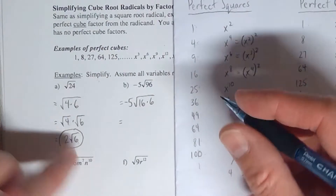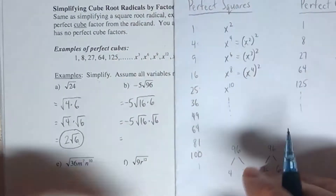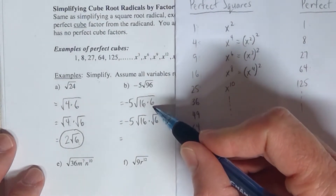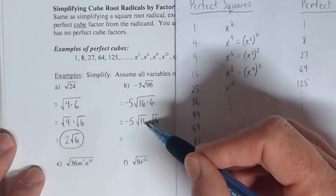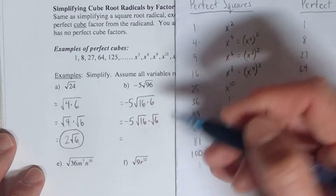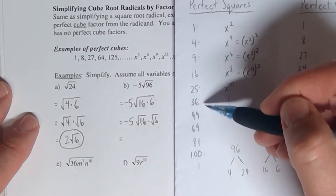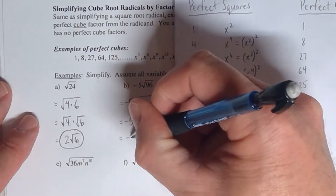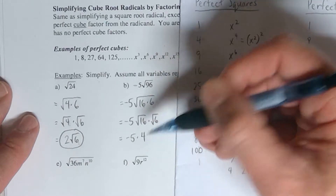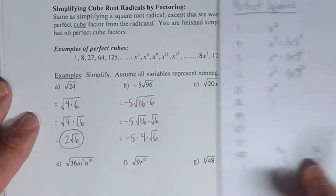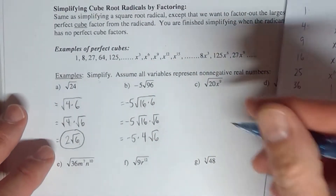Then we do the same thing as the last problem — we split it up. We're allowed to do that because 16 and 6 are being multiplied together, so the rule says we can split it. Then figure out what the first radical equals, because it has a perfect square underneath it. The square root of 16 is 4. Since it says negative 5 times a radical, this is now negative 5 times 4 times √6. You don't need to put the dot there anymore, but you can if you want.